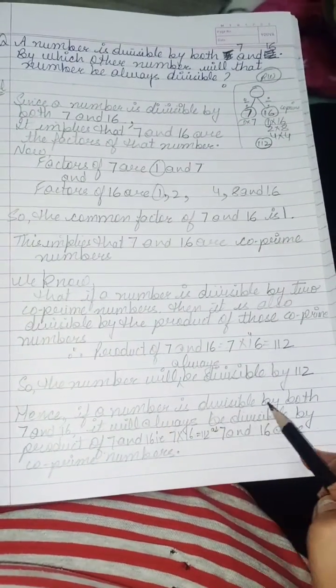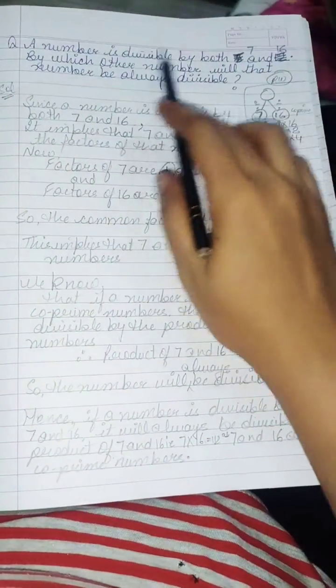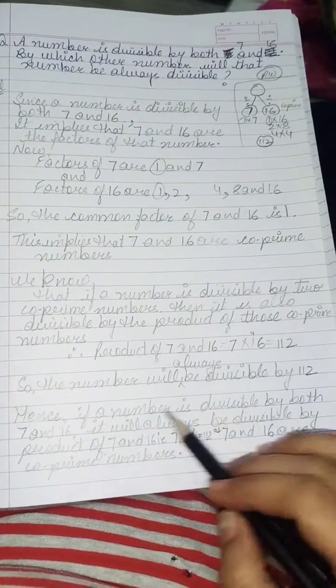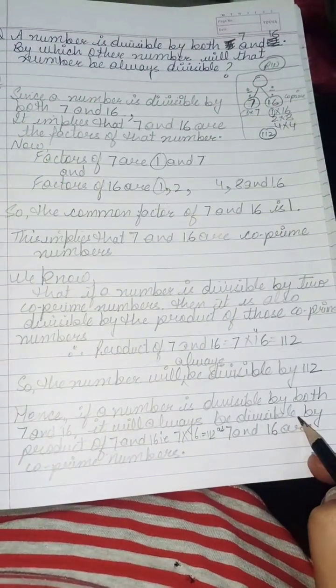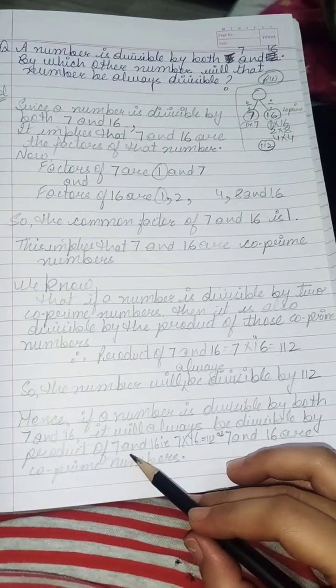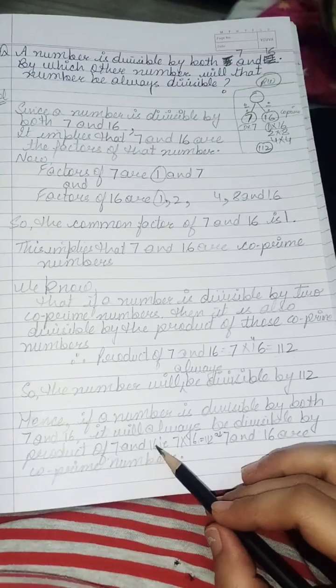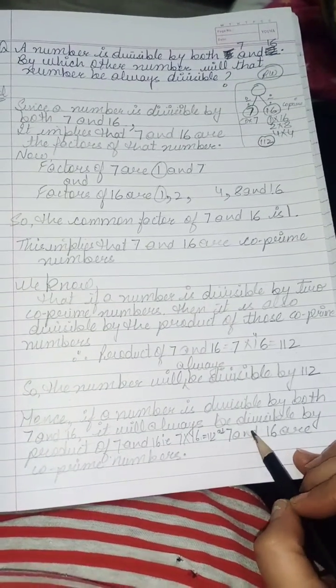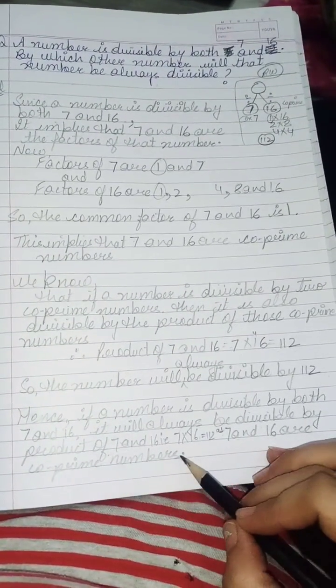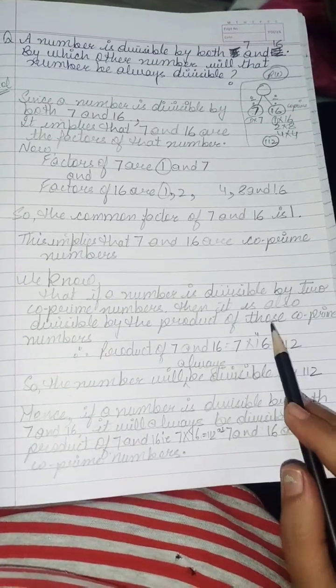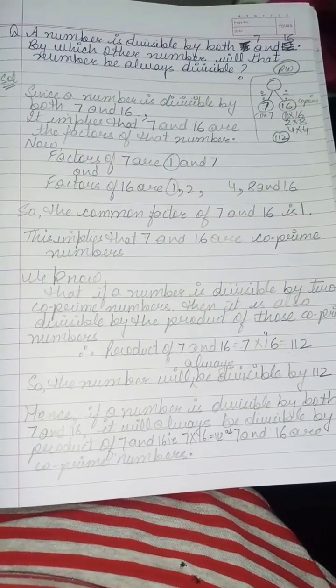Hence, if a number is, now this part is from the question, if a number is divisible by both 7 and 16, it will always be divisible by the product of 7 and 16, that is 112, as 7 and 16 are co-prime numbers. So this is based on the divisibility rule.